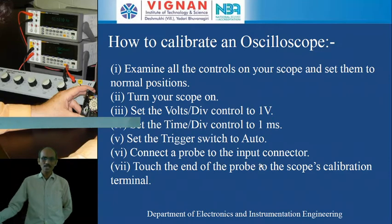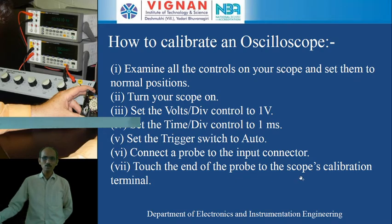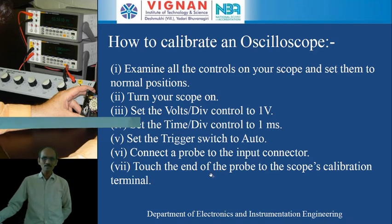Connect the probe to the input connector. We will be having two channels, channel 1 and channel 2, and we can take any one of the channels. We have to connect a CRO probe to the input connector of any one channel, and the other end of the CRO probe is connected to the calibration terminal. Touch the end of the probe to the scope's calibration terminal.